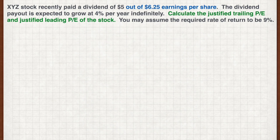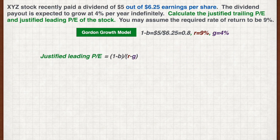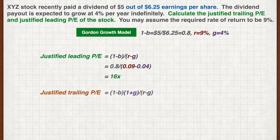And we're back. First, let's determine the three parameters required to calculate justified PE. The payout ratio is the dividend divided by the earnings, which is 0.8. Required return is given as 9% and growth rate at 4%. Plugging these figures into the formula for justified leading PE gives us a justified PE of 16 times. And likewise for justified trailing PE, that gives us 16.64 times.